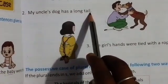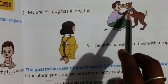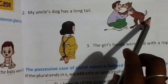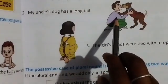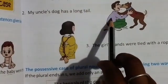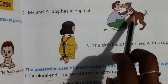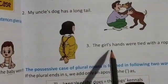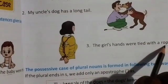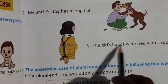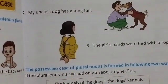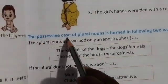My uncle's dog has a long tail — uncle's dog ka owner kaun hai? Uncle. The girl's hands were tied with a rope — kiski hands rope se bandhe hue hain? Girl ki. To iski owner kaun hai? Yeh girl hai.